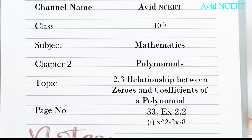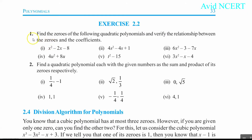The problem today we are solving is from exercise 2.2, which is on page number 33. The first problem is: find the zeros of the following quadratic polynomials and verify the relationship between the zeros and coefficients. The first problem is x squared minus 2x minus 8.